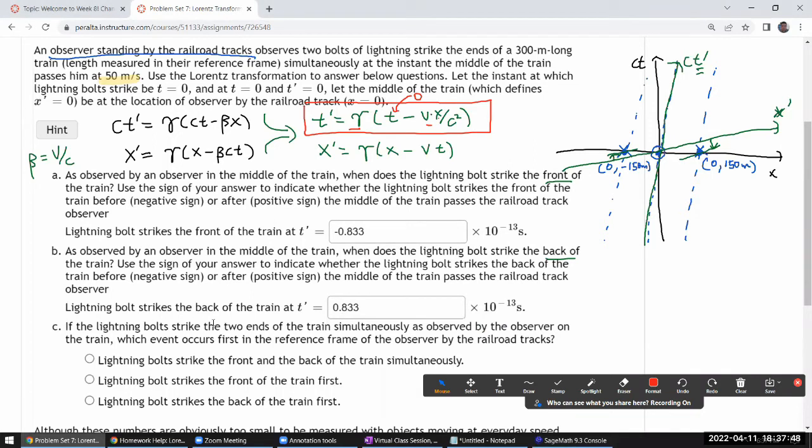And if the lightning bolt strikes simultaneously on the train, so that's a different picture here. We are describing where the lightning. So simultaneously for the train observer would be these two points for example. So which event occurs first in the reference frame of the observer by the railroad tracks. So looking at this makes it kind of easy to tell which one is first. You know this is the one that happens before the other event happens. So lightning bolt strike the back of the train first.